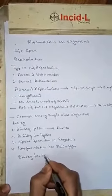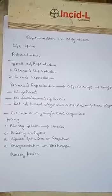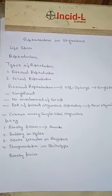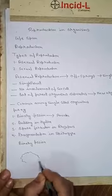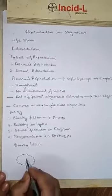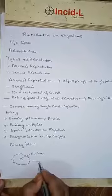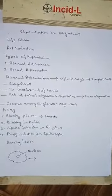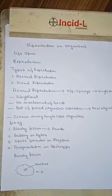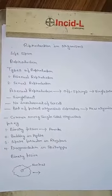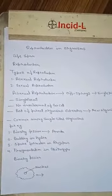Binary fission. As you have already studied in earlier classes, amoeba reproduces by binary fission. This is a structure of amoeba, which is a single-celled organism. This is known as the nucleus. In the process of binary fission in amoeba, the nucleus divides into two parts, and the fission of the cytoplasm takes place. Amoeba ultimately divides by the process of binary fission, which is the asexual mode of reproduction.